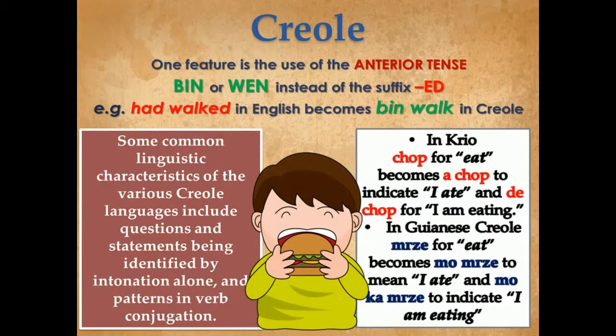One feature that distinguishes a creole language from English is the use of the anterior tense, which resembles the past perfect tense in English. The anterior tense uses 'been' or 'bin' instead of the suffix '-ed', so that 'it walked' in English becomes 'been walk' in creole. Some common linguistic characteristics include questions and statements identified by intonation alone, and patterns in verb conjugation. For example, in Krio, the English-based creole of Sierra Leone, the word 'chop' for eat becomes 'a chop' to indicate 'I ate' and 'e chop' for 'I'm eating'. In Guyanese creole, the word for eat becomes 'mo mgze' for 'I ate' and 'mo ka mgze' for 'I'm eating'.